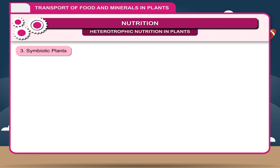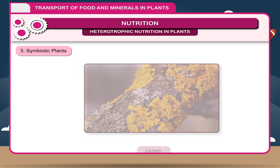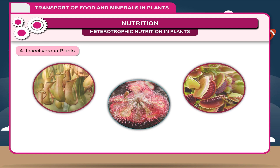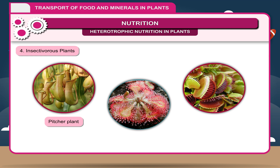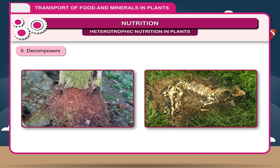3. Symbiotic plants: Plants which live on other organisms and are mutually benefited from one another. Example: lichen. The body of lichen constitutes algae and fungi, where the alga contains chlorophyll and prepares food, whereas the fungal part gives shelter to the algae. 4. Insectivorous plants: Insect-eating plants are called insectivorous plants. In these plants, the leaves are modified to help in catching insects. Examples: pitcher plant, sundew plant, Venus flytrap. 5. Decomposers: Certain microorganisms such as bacteria and fungi decompose the dead remains of plants and animals and are called decomposers. They maintain the balance of nutrients in nature.